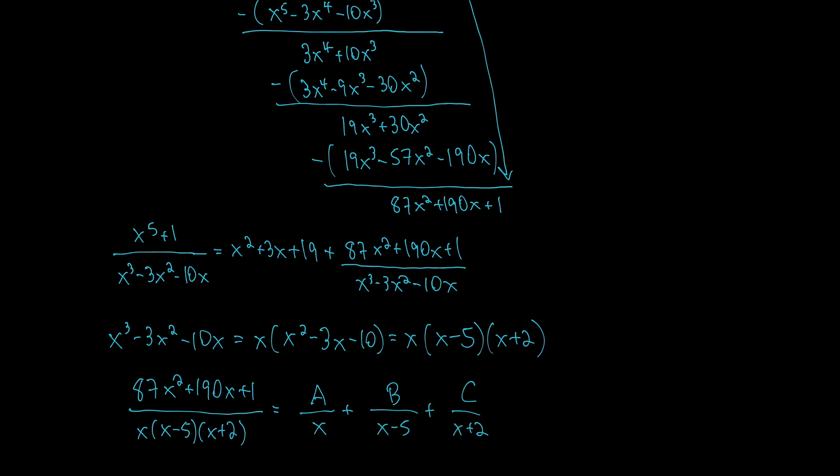So we would integrate these three terms separately, then we replace this part of our integral with these three terms. Each of these is just power functions so it's easy to integrate and each of these is just going to be a natural log times some constant a, b, c that we figure out.